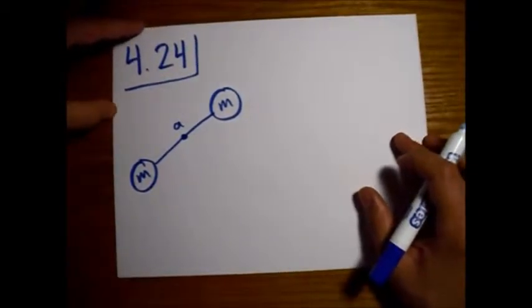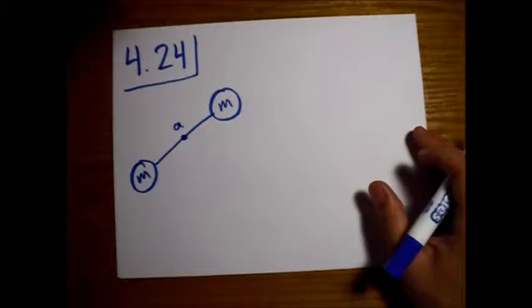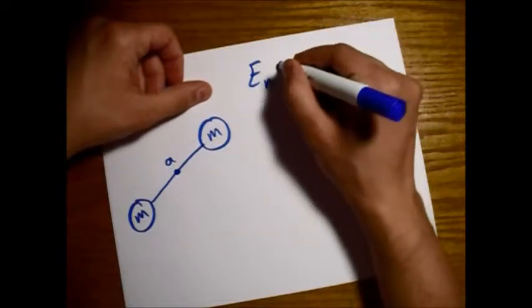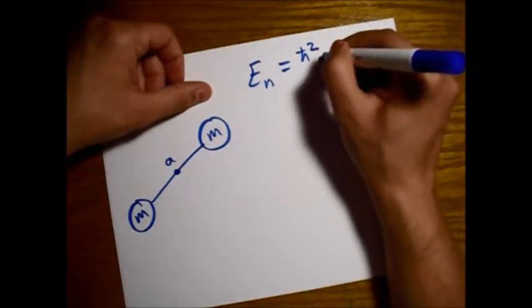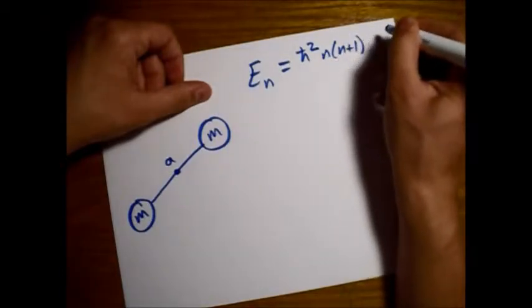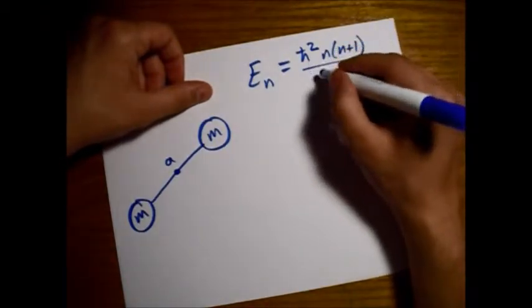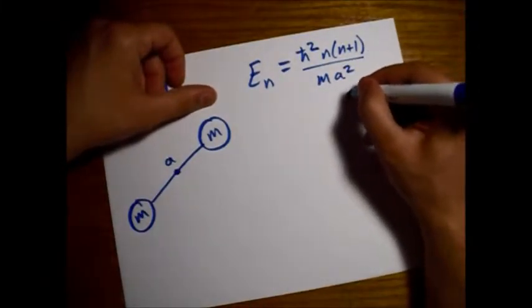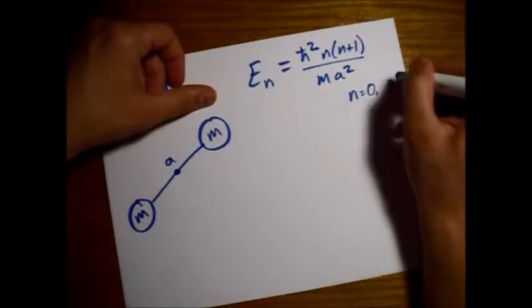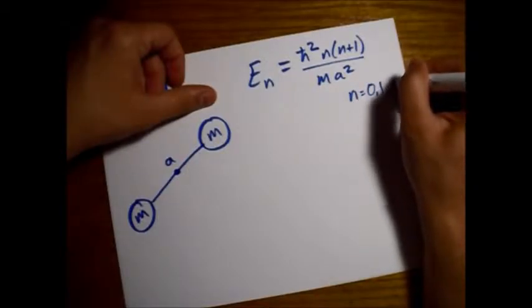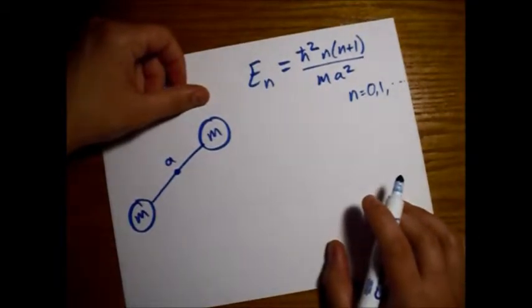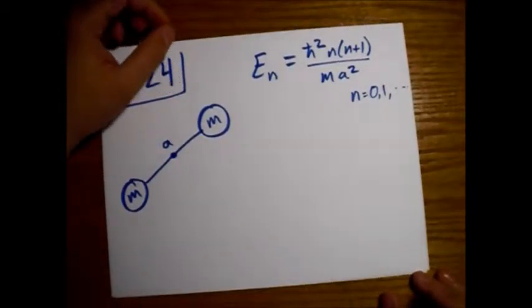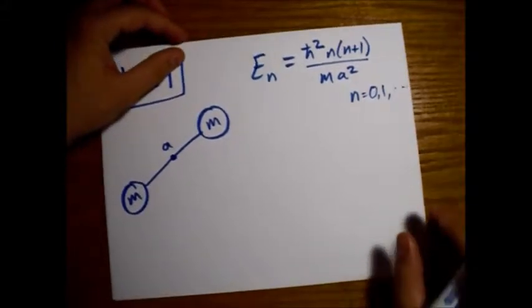All right, we're going to show that the allowed energies of the rigid rotor are given by this equation. And n goes in integer steps, 0, 1, 2, 3. And he even gives us a hint: first express the classical energy in terms of the total angular momentum.